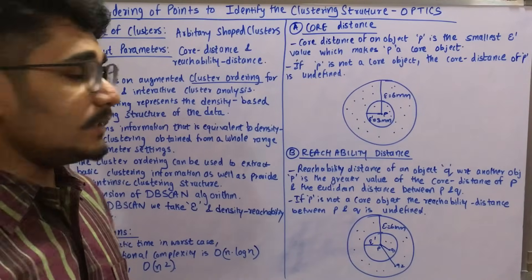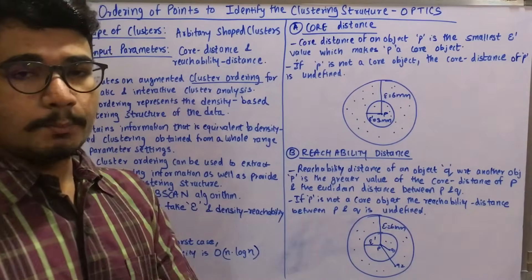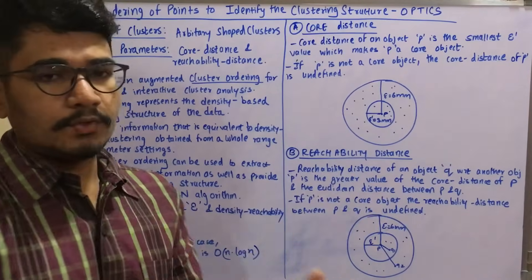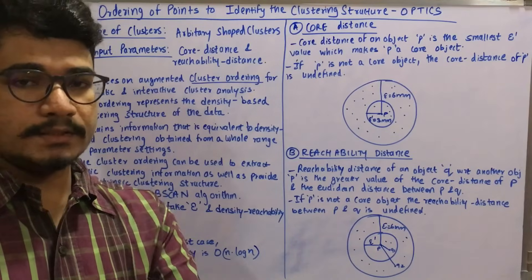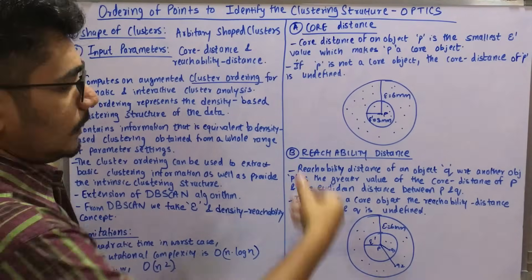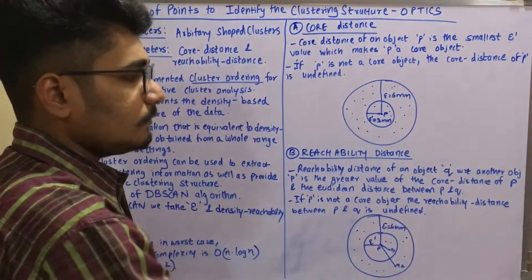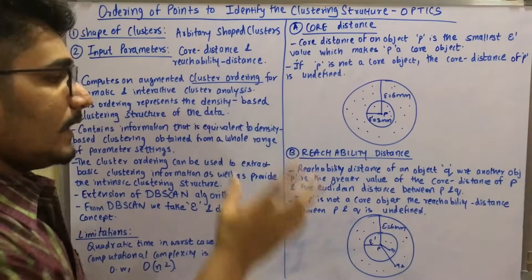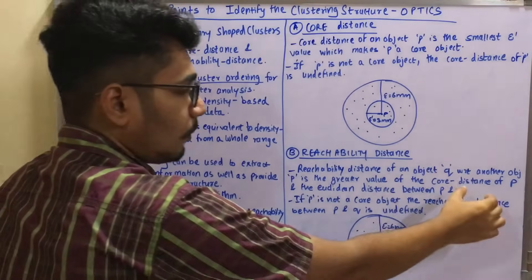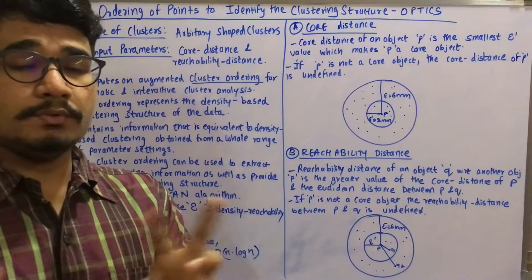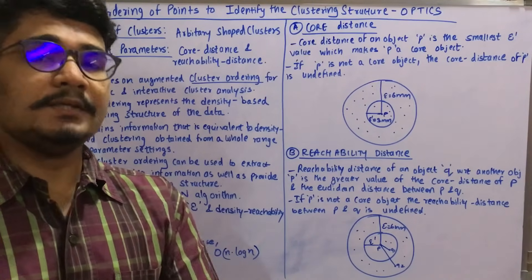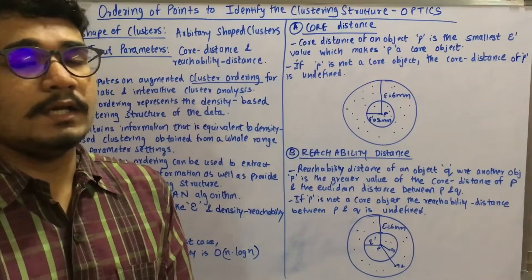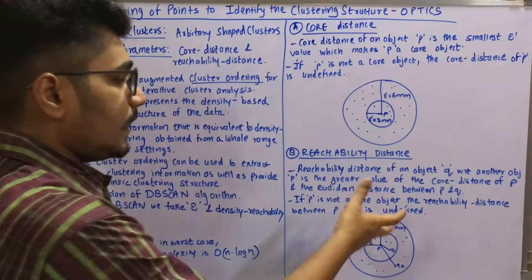The reachability distance compares two different objects — the distance needed to reach from one object to another. The reachability distance of object q with respect to object p is the greater value of: the core distance of p, and the Euclidean distance between p and q. You compare both parameters and assign whichever is greater as the reachability distance. If p is not a core object, the reachability distance is undefined.